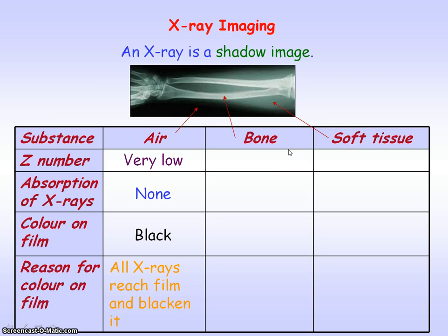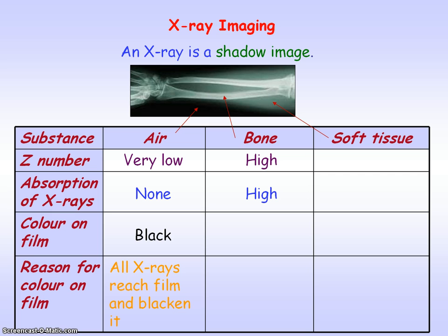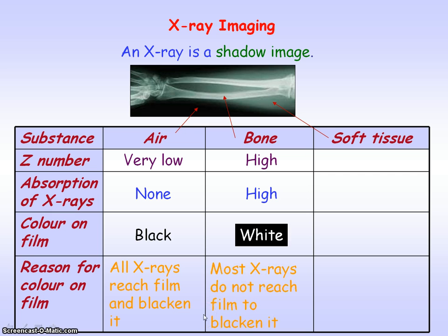Bone has a high density because it's made up of substances which have a high proton number, and as a result the absorption of x-rays by bone is high. That means most of the x-rays do not pass through bone and so do not reach the film and cannot blacken it. Hence bone appears white, and so the x-ray image is a shadow image of bone.